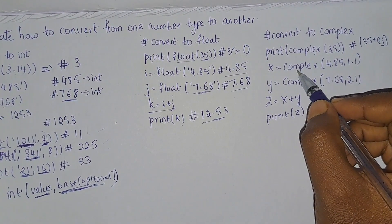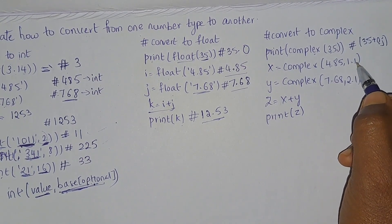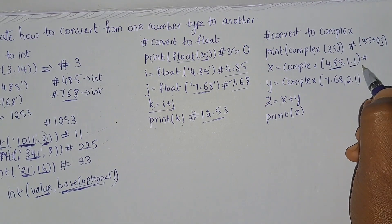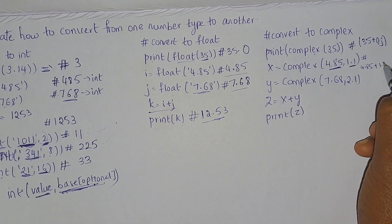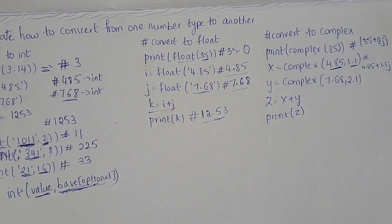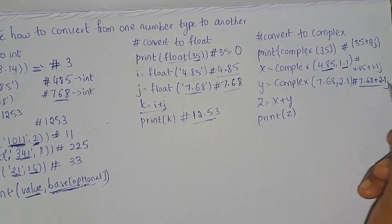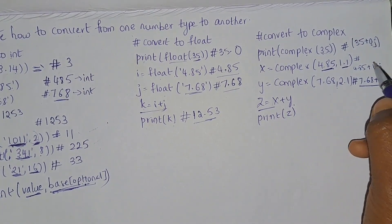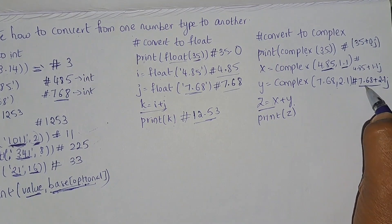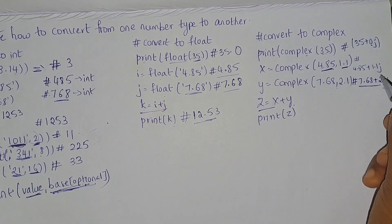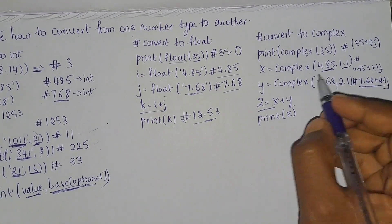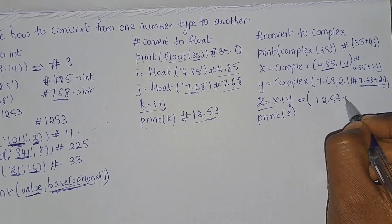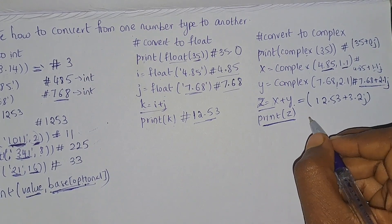If you take x = complex(4.85, 1.1), the first argument is the real part and the second is the imaginary part, so this gives 4.85+1.1j. Similarly y is defined the same way. When you perform z = x + y, the real parts are added together and the imaginary parts are added together, so z will store 12.53+3.2j.